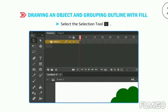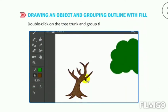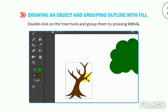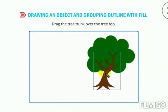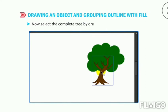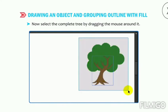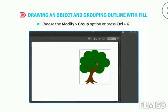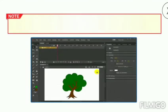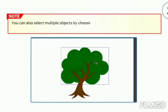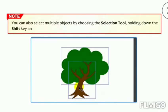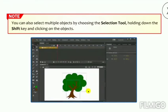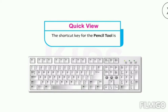Select green as the fill color and choose the Paint Bucket tool, then click inside the tree top. Similarly, fill brown color in the trunk. Select the Selection tool, double-click on the tree trunk, and group them by pressing Ctrl+G. Drag the tree trunk over the tree top, then select the complete tree and choose Modify then Group, or press Ctrl+G. The shortcut key for the Pencil tool is Shift+Y and for the Selection tool is V.